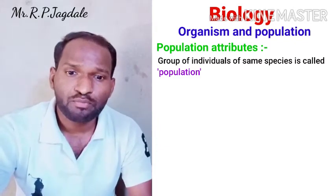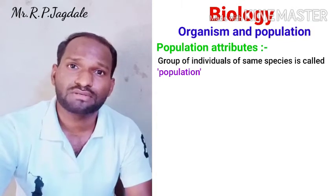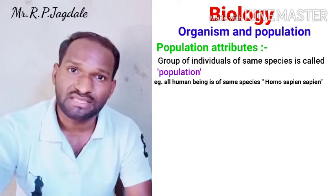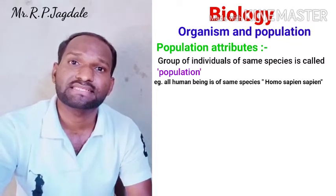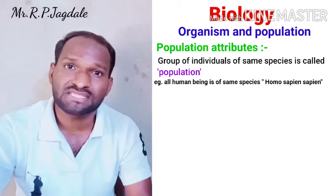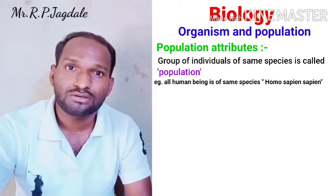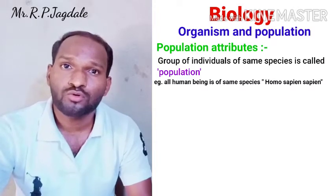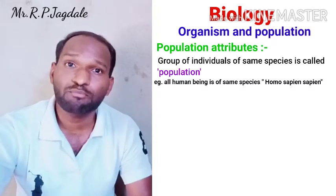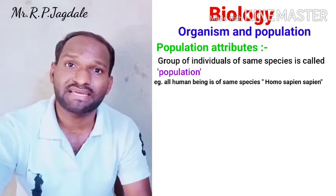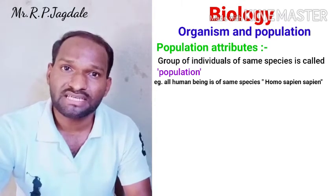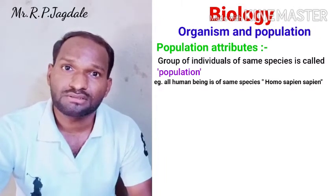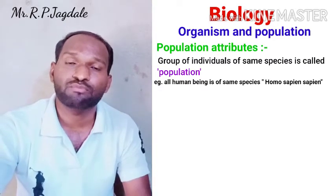For example, taking the example of human beings: all human beings are of a single species, and the name of that species is Homo sapiens sapiens. That population is assessed by census. We know the census is taken every 10 years — every 10 years there is a calculation or census of the population.